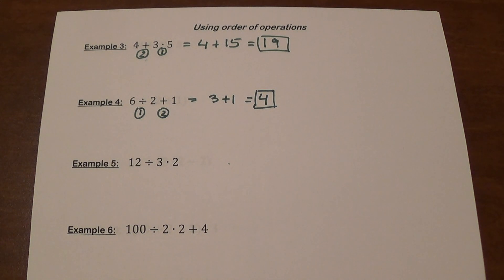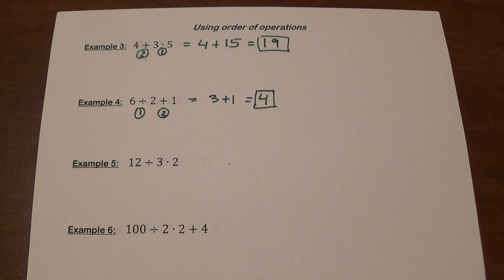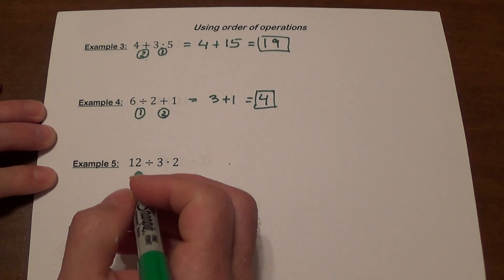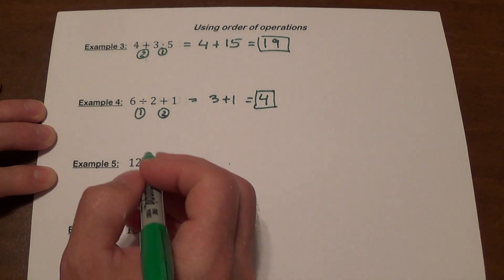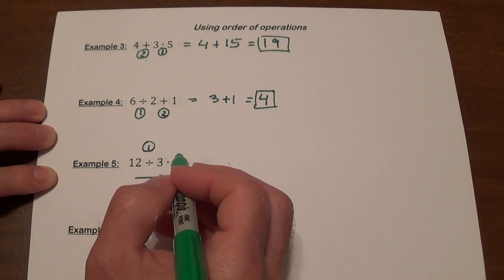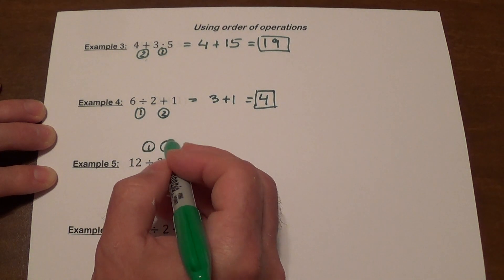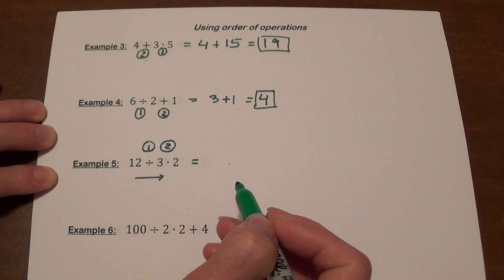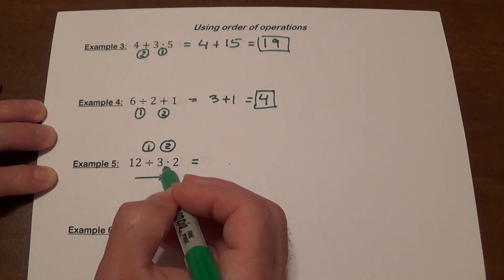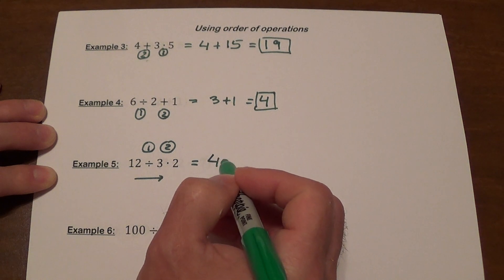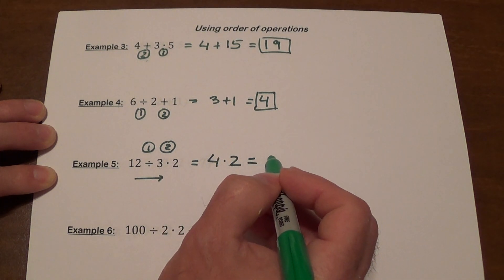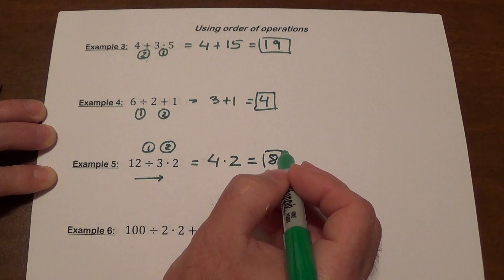Example 5: 12 divided by 3 times 2. There is only one correct answer. We only have division and multiplication, so we do it left to right. 12 divided by 3 gives us 4, then 4 multiplied by 2 is 8.